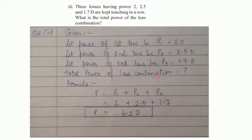Total power of the lens combination will be given by the formula P is equal to P1 plus P2 plus P3. We have to take the sum of the powers of all the three lenses.